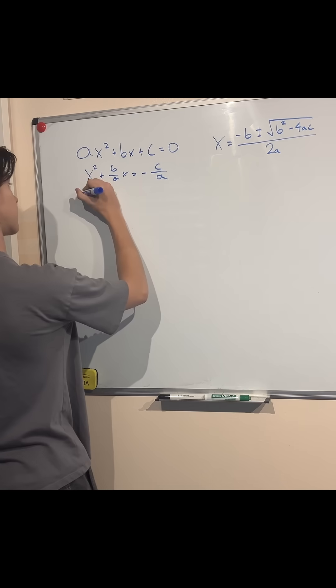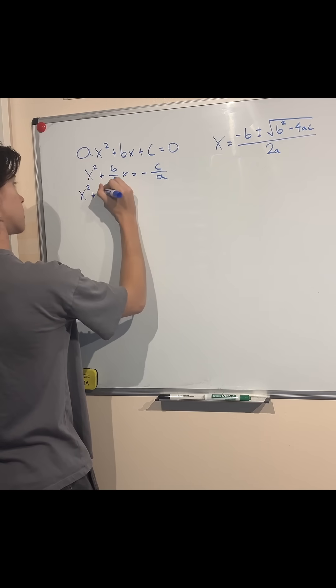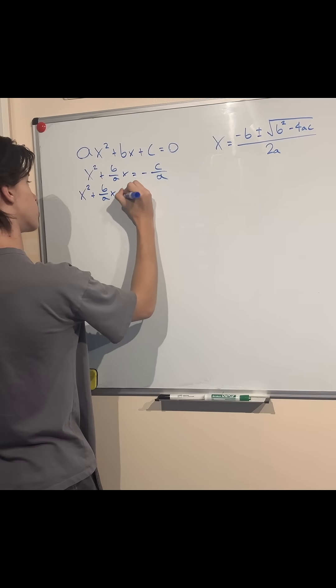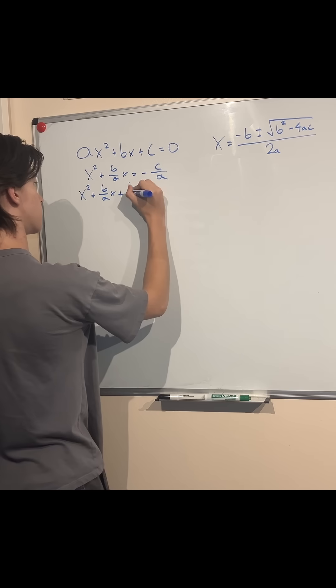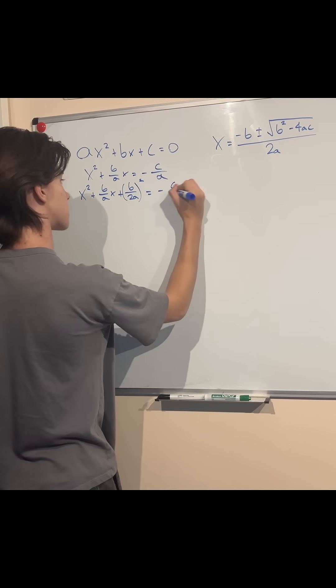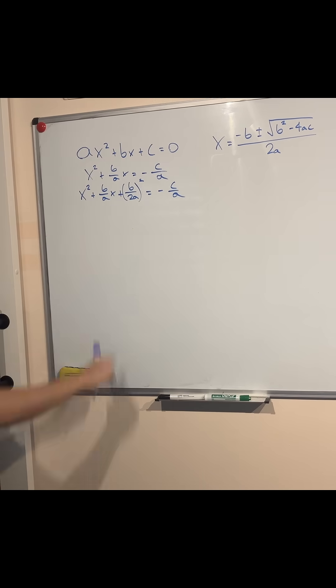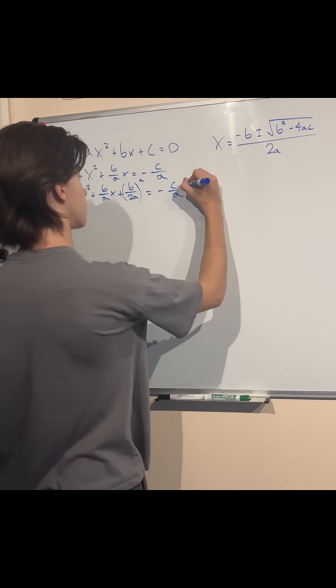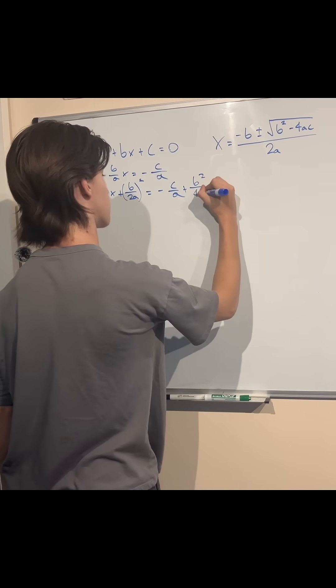And so by adding this (b/2a)² to the expression, and also on the left hand side, we can factor this into a perfect square binomial. And here we can open it up as well.